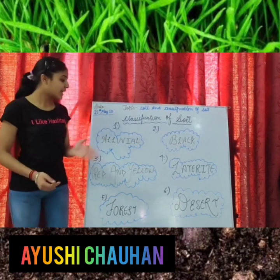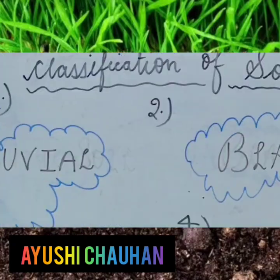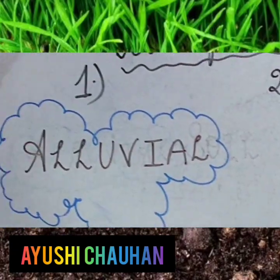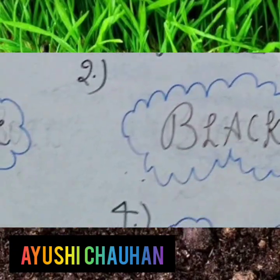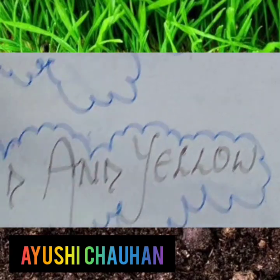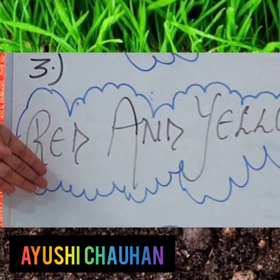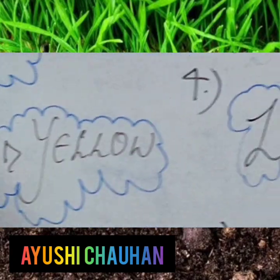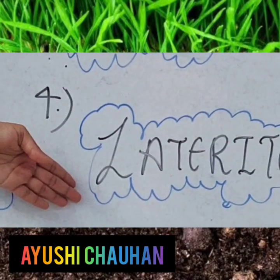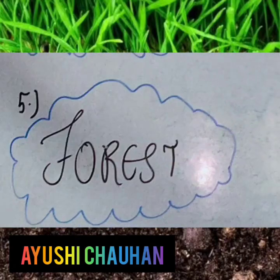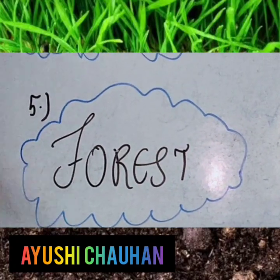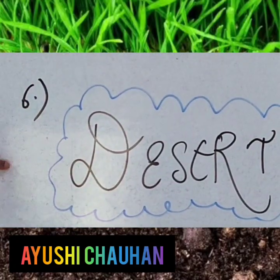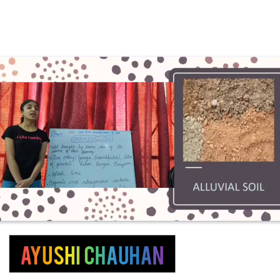First, alluvial. Second, black. Third, red and yellow. Fourth, laterite. Five, forest. Six, desert.